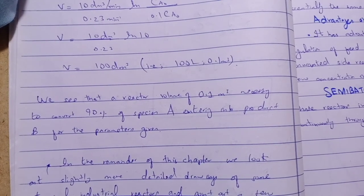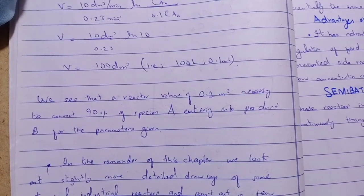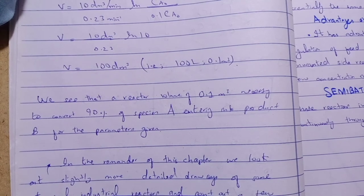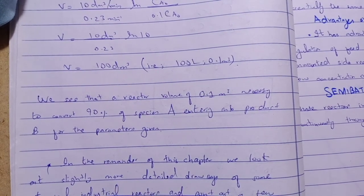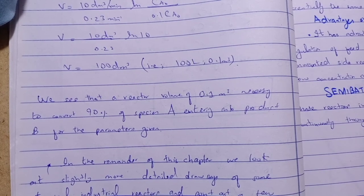So we see that a reactor volume of 0.1 meter cube is necessary to convert 90% of species A entering into product B, for the given parameters.